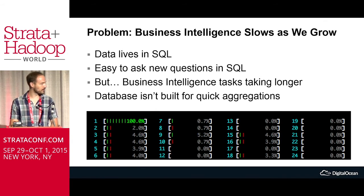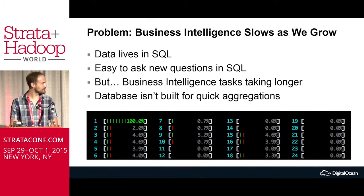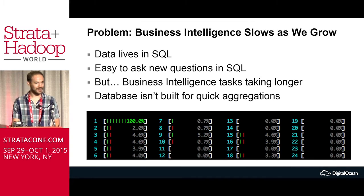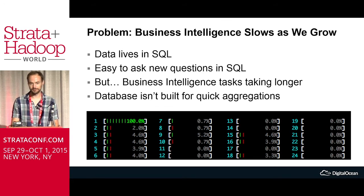It's architected for row-level operations. This is a replica of our database which runs our software, and it's not meant for our dashboarding team — it's meant for our row-to-row operations. So as we grow, our reports are getting slower, and our SQL team, which really knows how to build SQL, is getting less effective. They're not able to investigate the data as well because it just takes longer to dive into the data.